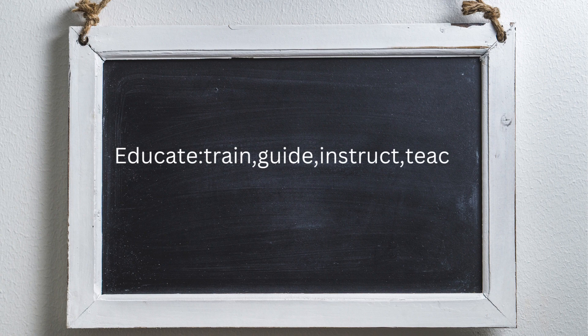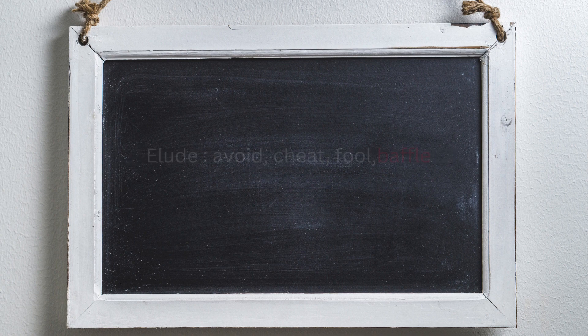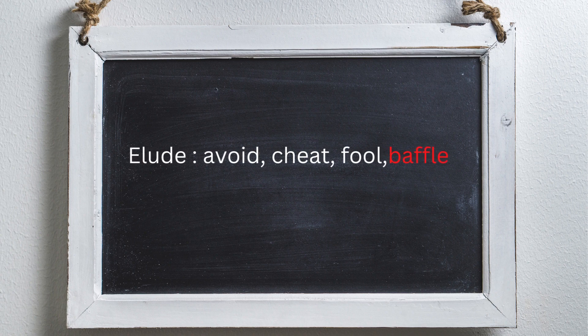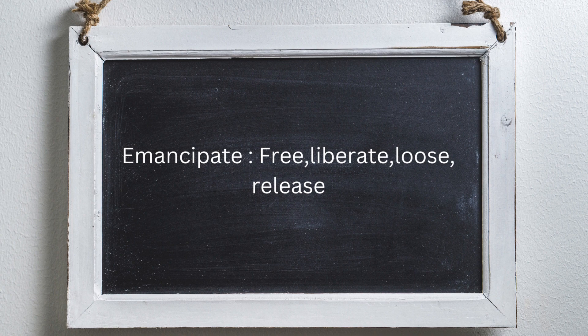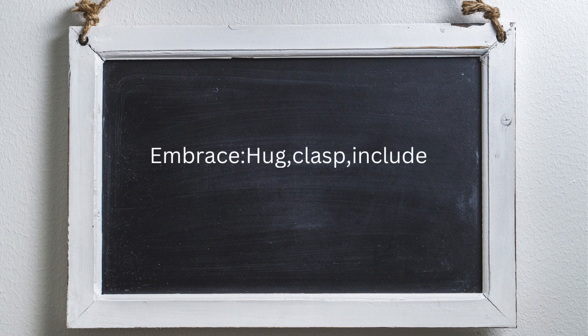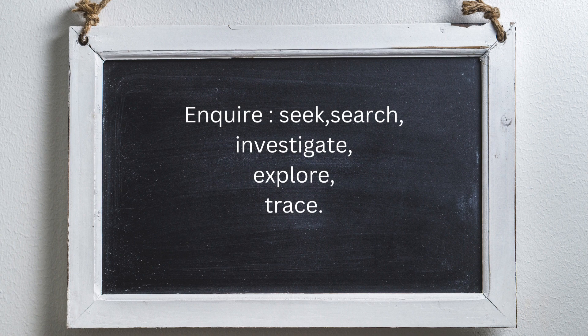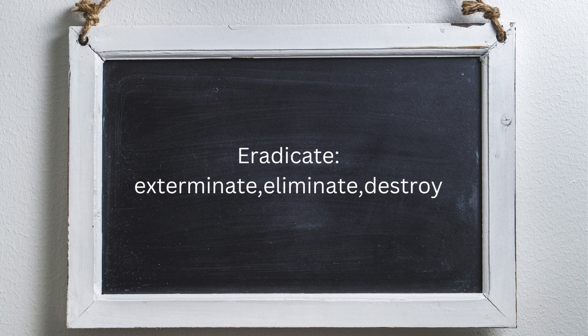Eager: keen, enthusiastic. Educate: train, guide, instruct, teach. Elude: avoid, cheat, fool, baffle. Emancipate: free, liberate, release. Embrace: hug, clasp, include. Enquire: seek, search, investigate, explore, trace. Eradicate: exterminate, eliminate, destroy.